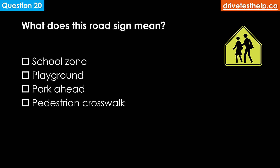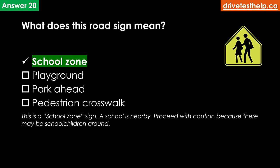What does this road sign mean? Options: school zone; playground; park ahead; pedestrian crosswalk. The correct answer is school zone. This is a school zone sign — a school is nearby. Proceed with caution because there may be school children around.